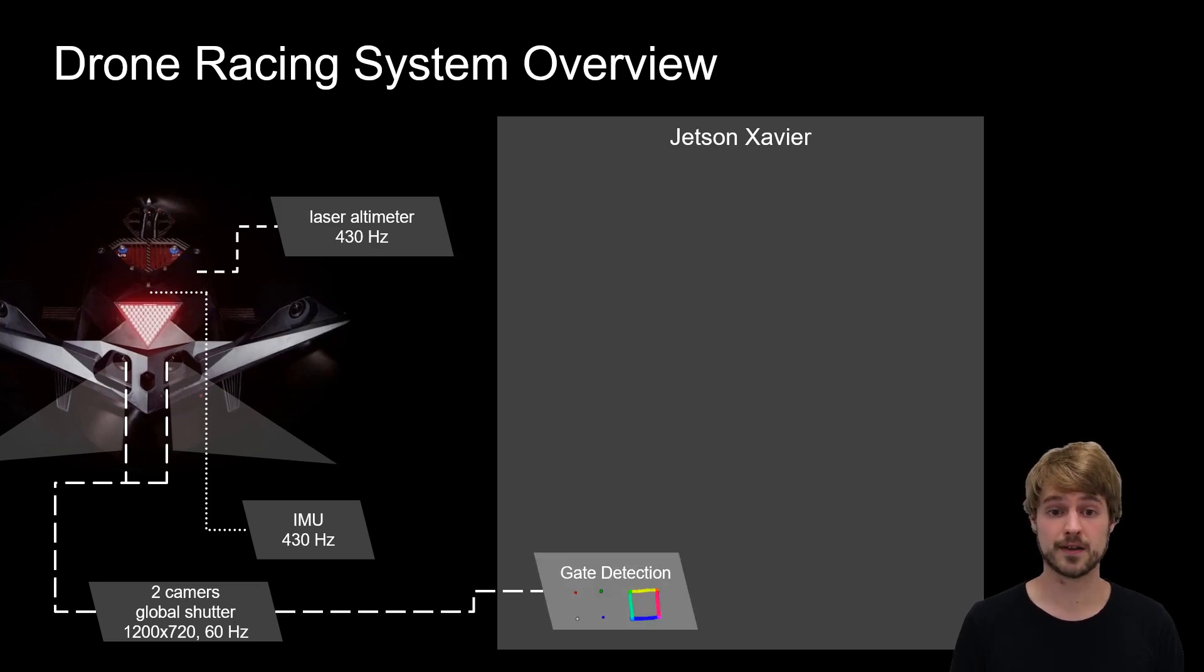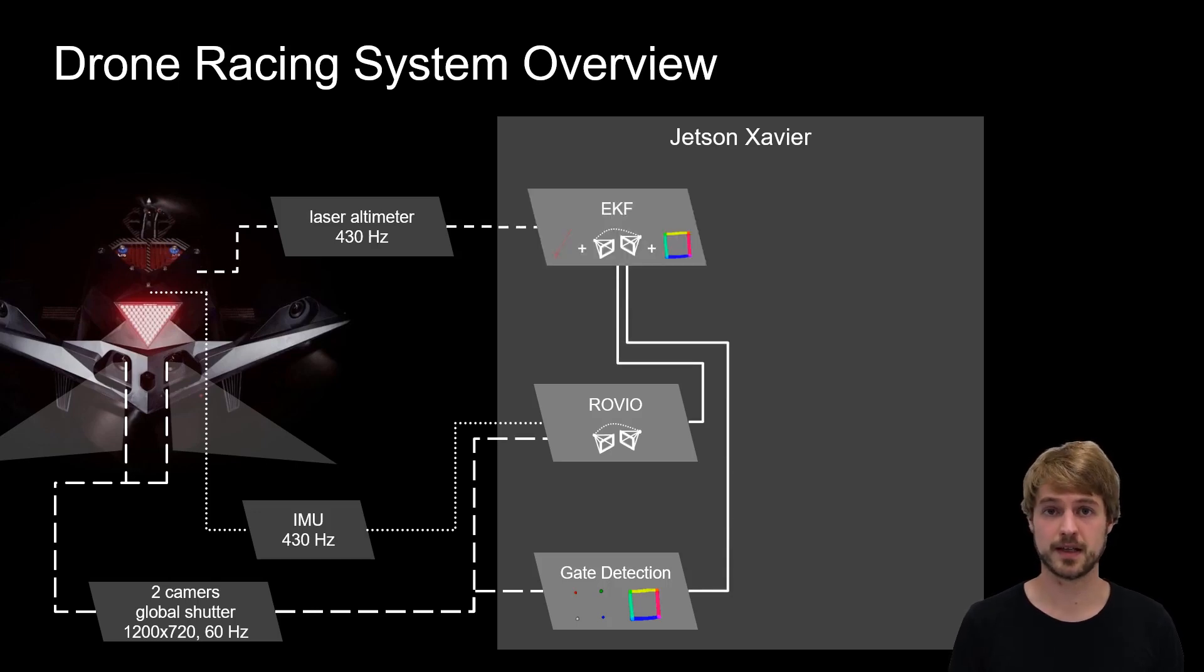We use the two camera feeds to perform gate detection. Simultaneously, we run a visual inertial odometry pipeline, the output of which we fuse with the gate detections and the altimeter measurements in an extended Kalman filter.